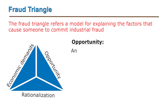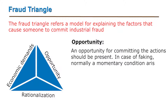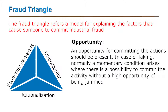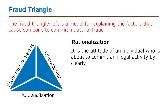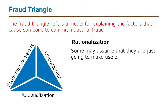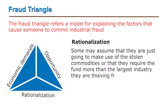The second element is opportunity — an opportunity for committing the actions should be present. In cases of faking, normally a momentary condition arises where there is a possibility to commit the activity without a high chance of being caught. Next comes rationalization: it is the attitude of an individual who is about to commit an illegal activity by clearly managing what they are about to do. Some may assume they are just going to make use of stolen commodities, or that they require the funds more than the large industry they are stealing from.